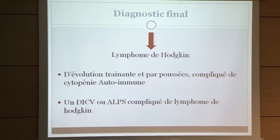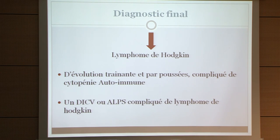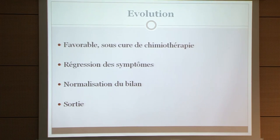The final diagnosis was Hodgkin lymphoma — either a slowly evolving lymphoma with flares complicated by autoimmune cytopenias explaining the initial presentation, or a Common Variable Immune Deficiency or ALPS complicated by subsequent Hodgkin lymphoma, explaining the negative first biopsy. Evolution was favorable under chemotherapy with good symptom regression and normalization of investigations. Thank you.